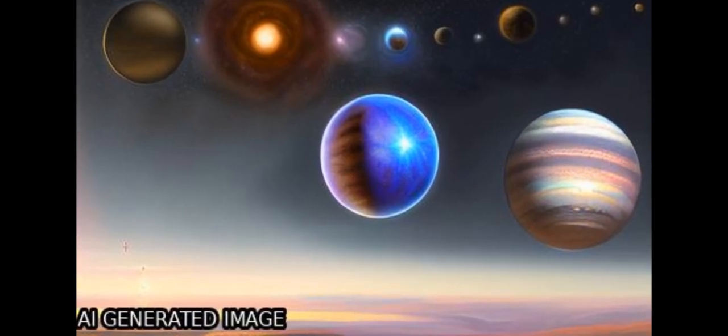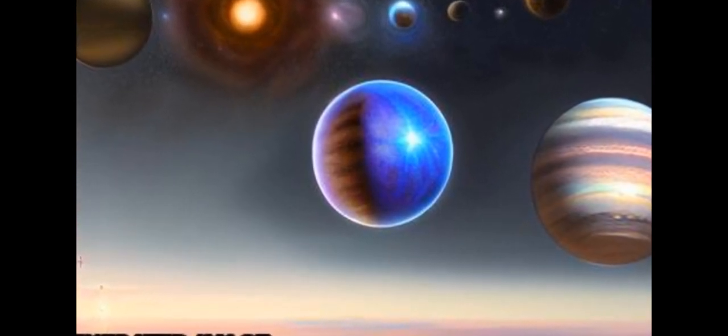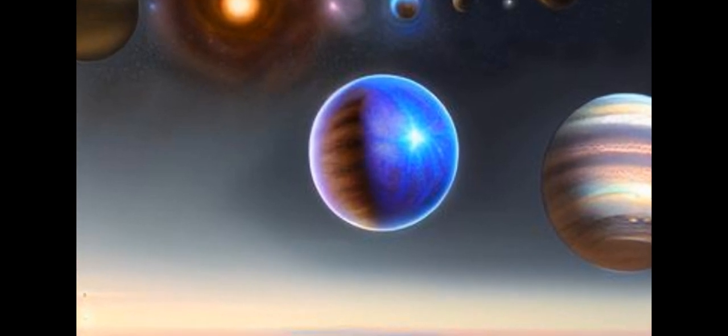This suggests that the formation process of planets may be different than previously thought, with planets forming around lower-mass stars and then migrating outwards to larger orbits.